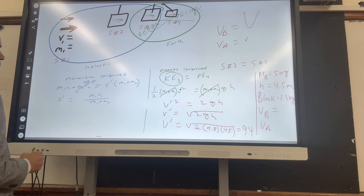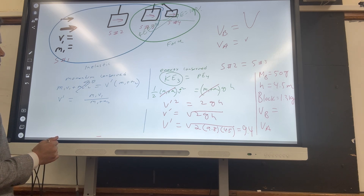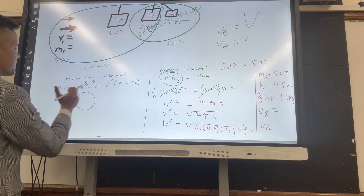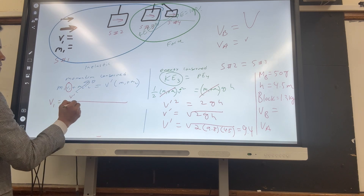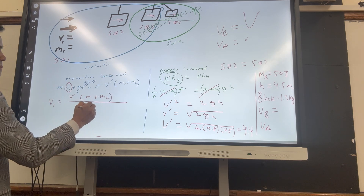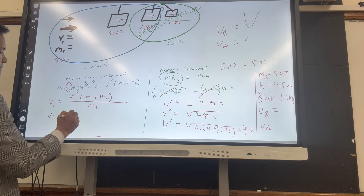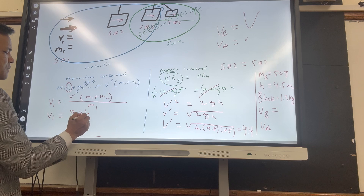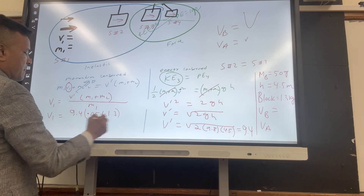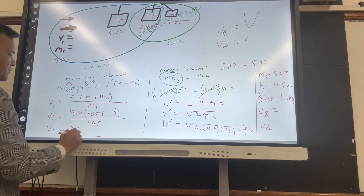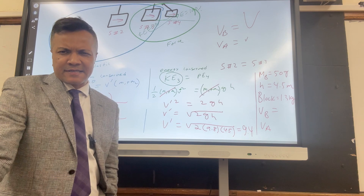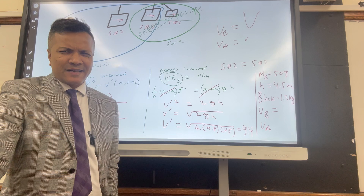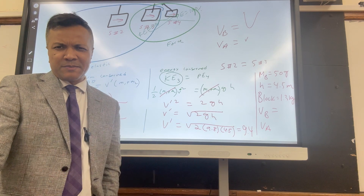Now use the momentum equation. v1 = v' · (m1 + m2) / m1. With v' = 9.4, m1 = 0.05 kg, and m2 = 1.3 kg: v1 = 9.4 × (0.05 + 1.3) / 0.05 = 254 m/s. That's the ballistic pendulum. You'll have more problems in the future, but hopefully you now understand the differences between conservation of momentum and conservation of energy.